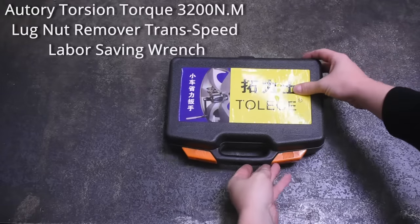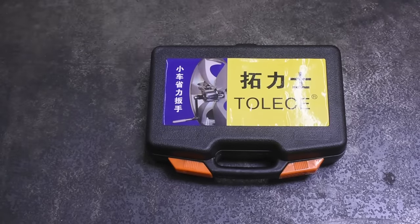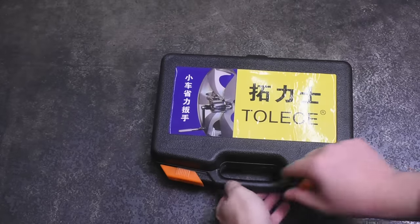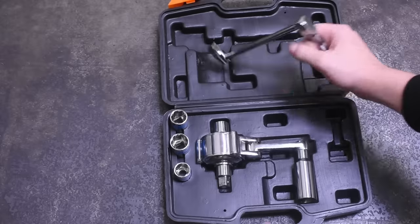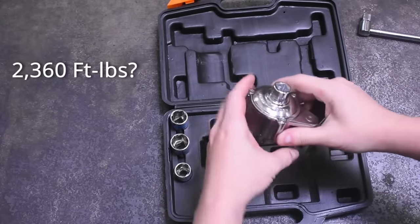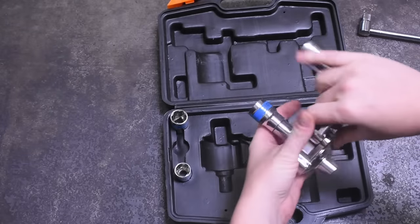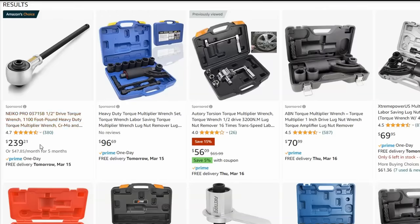Up first, we got the Autory Torsion Torque 3200Nm Lugnut Remover Trans Speed Labor Saving Wrench. Totally the sort of thing your grandpa taught you after explaining lefty-loosey righty-tighty, am I right? 3200Nm would be a full 2,360 foot-pounds of torque from a hand crank. Of course, torque multipliers, they're a real thing. They can and do work.